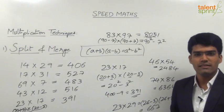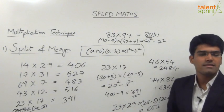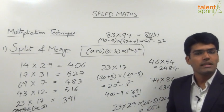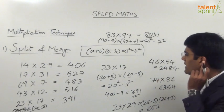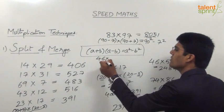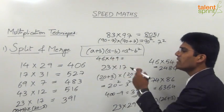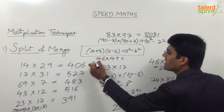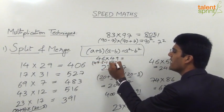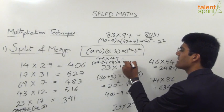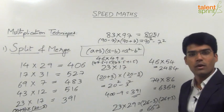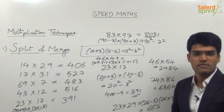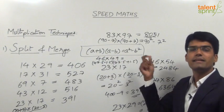The key point is you should be able to decide whether (a + b)(a - b) is applicable or not, because though it is easy, it is not applicable always. For example, if the question is 46 into 49, split and merge is easy, but (a + b)(a - b) is not, because this would be something like 47.5 minus 1.5 and 47.5 plus 1.5 — using a² - b² gives 47.5² - 1.5², which becomes a very difficult calculation.